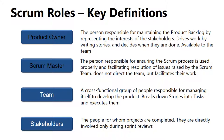The team is a cross-functional group — the development team, QA team, BA team, and so on — responsible for managing itself to develop the product or software. They break down stories into tasks and execute them. Finally, stakeholders are the people for whom projects are completed; they are directly involved only during sprint reviews. As a project manager you need effective communication with both stakeholders and the team.